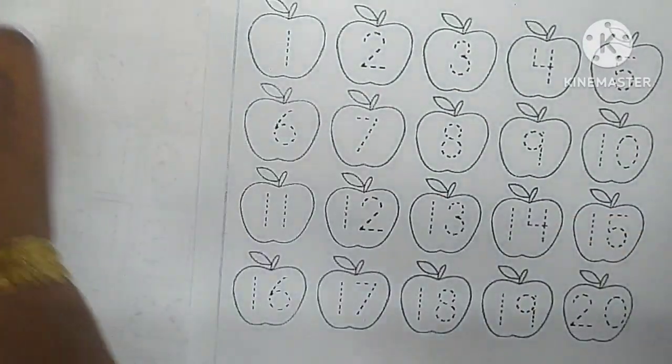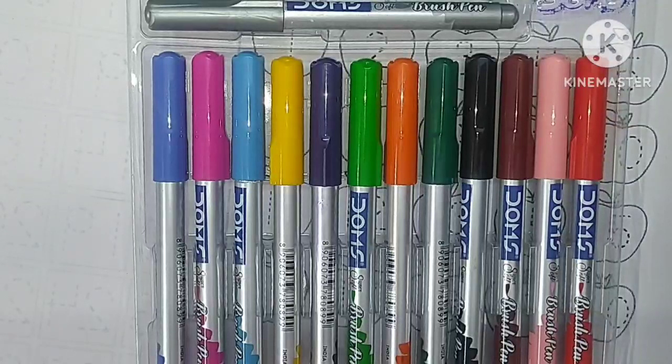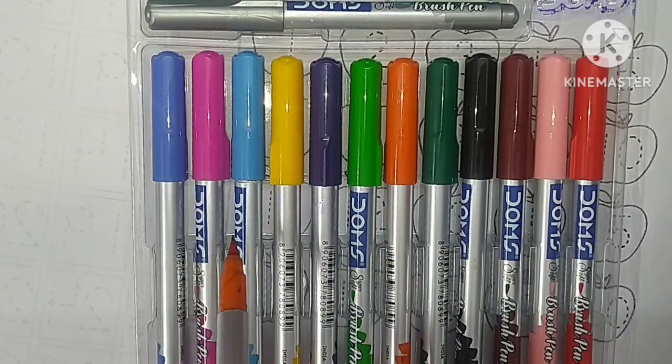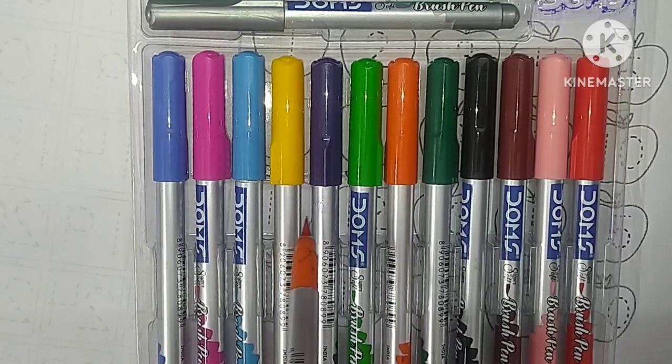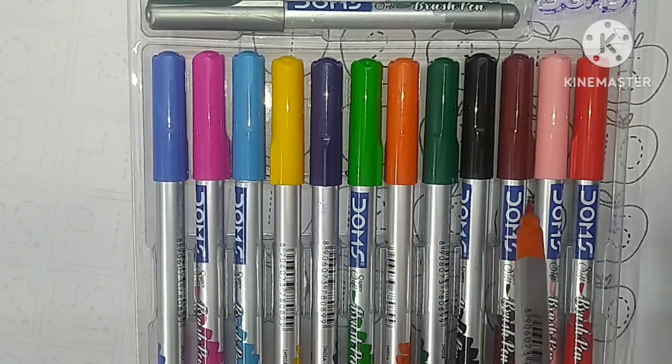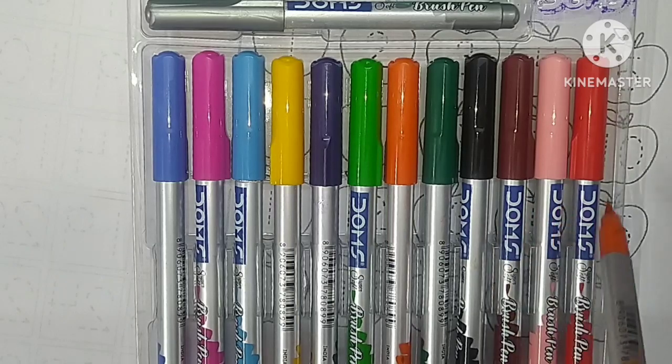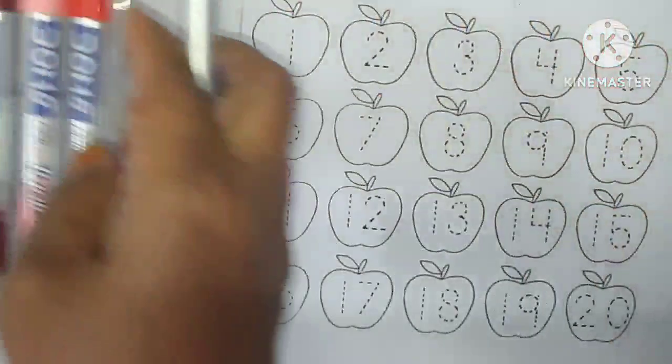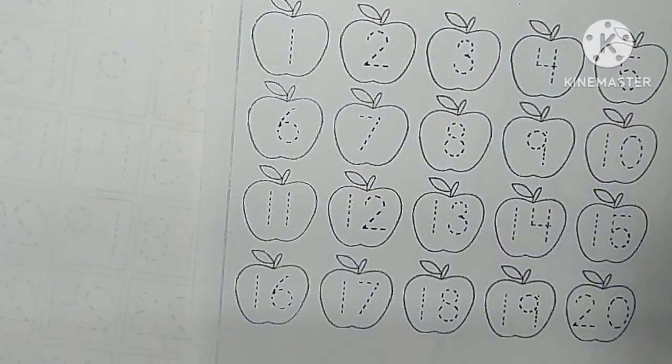Hello kids, the last name blue color, pink color, light blue color, yellow color, purple color, green color, orange color, dark green color, black color, brown color, peach color, red color, silver color. See you in color. Let's start.